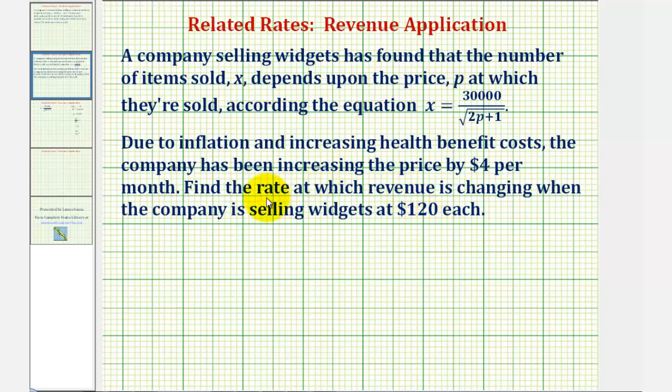So our ultimate goal here is to find the rate at which the revenue is changing under these conditions. Let's begin by determining the revenue equation. We know revenue r is equal to the price of the items times the quantity sold, or in this case p times x. But to write revenue in terms of one variable p, we can make a substitution using this equation here.